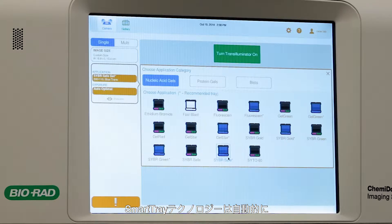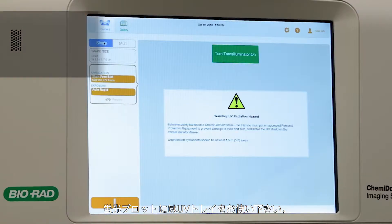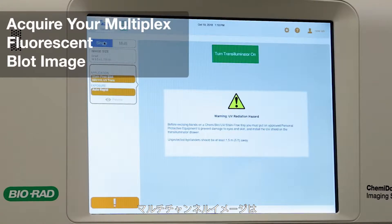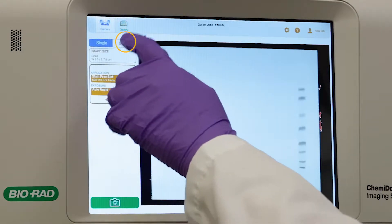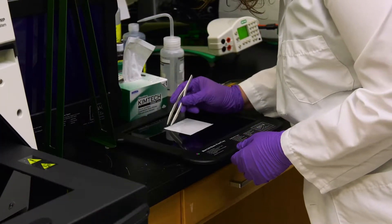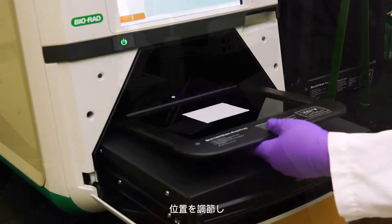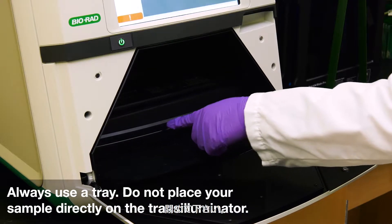SmartTrade technology automatically recognizes application-specific trays and adjusts imaging parameters and software options accordingly. For fluorescent blots, select the UV tray. To acquire multi-channel images, begin by tapping Multi. Center your membrane on the UV tray. Once you are satisfied with the position, push the transilluminator back in and close the drawer.